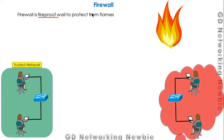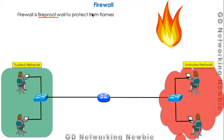We also have some other network — maybe another organization's network or the internet — and we call that the untrusted network. Since we are part of the internet, these two networks are somehow connected, and there are points where we want protection from the traffic coming from the untrusted network to the trusted network.